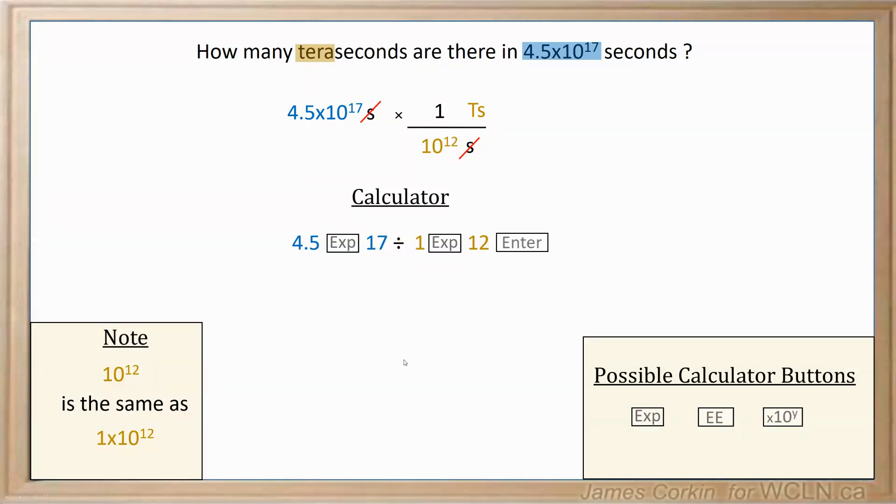Okay, when you hit your enter key in your calculator, your answer should pop out in one of two ways. If your calculator is set to automatically convert to scientific notation, it should say 4.5 times 10 to the power of 5 teraseconds. If not, it will say 450,000 teraseconds.